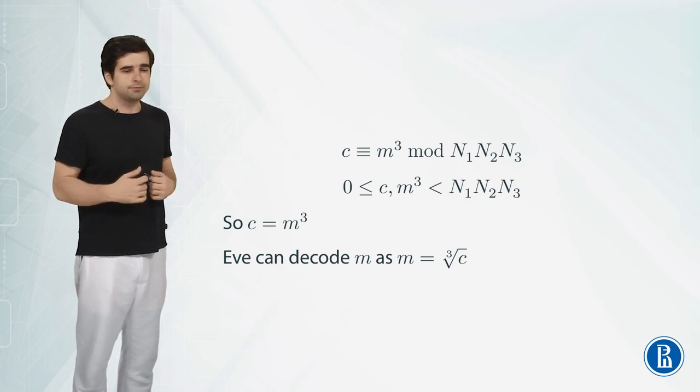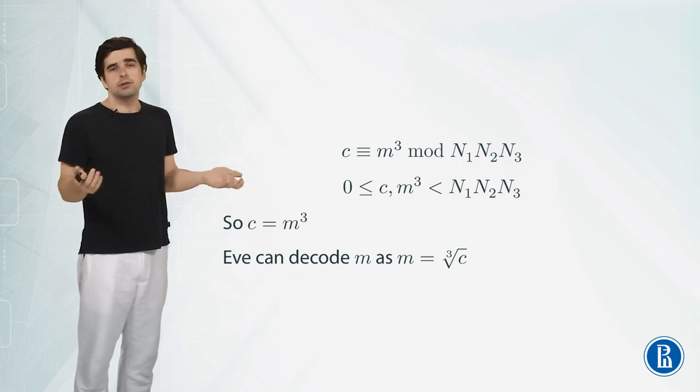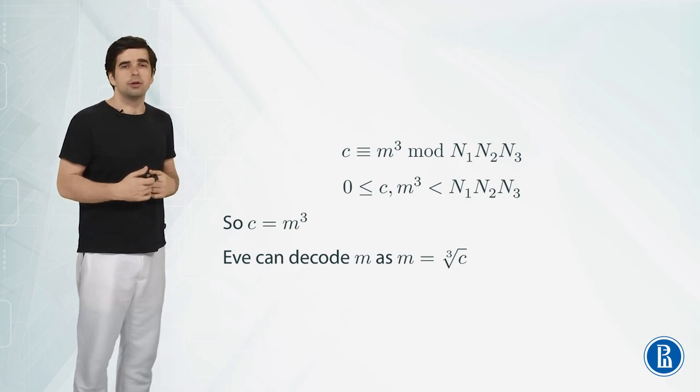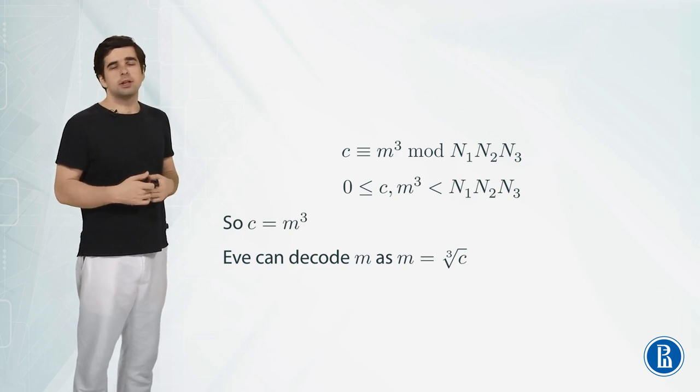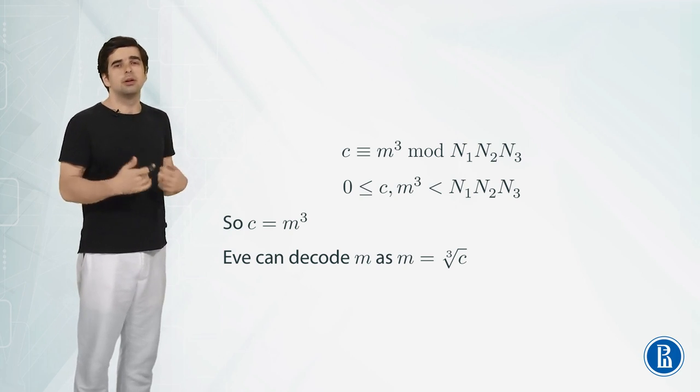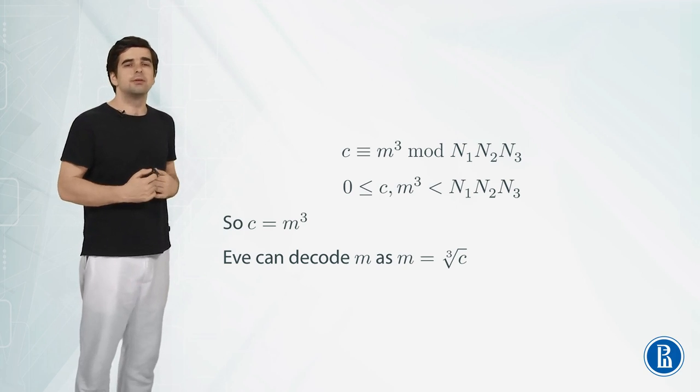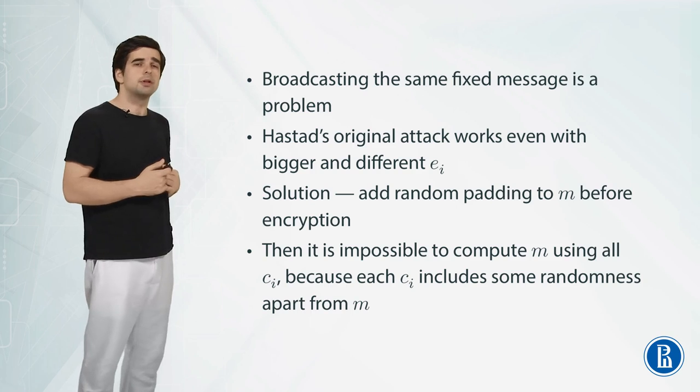So we just need to apply extended Euclid's algorithm to construct number c and then we just compute the regular cube root. We can do that in floating point arithmetics but then just round up to the closest integer and it will turn out to be the exact message that someone sent if we intercepted the ciphertext.